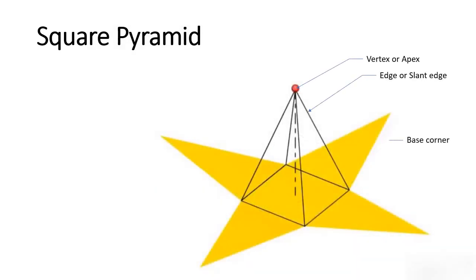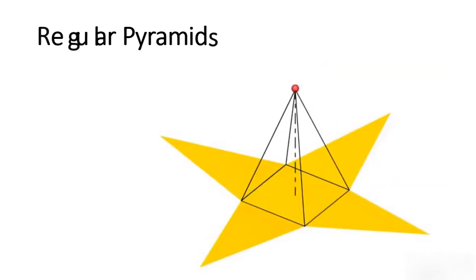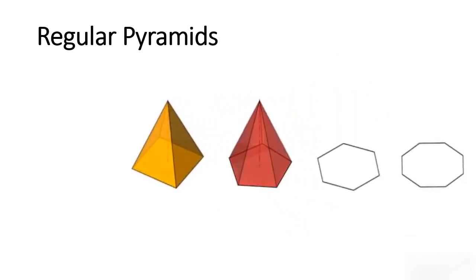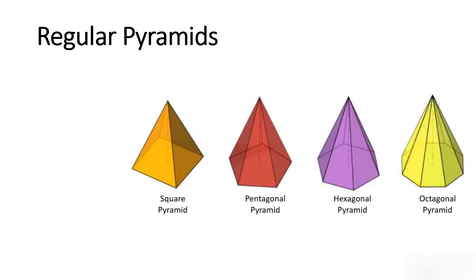The base edges define the base, and on the lateral surface we have the surface edge and face edges. These are some examples of regular pyramids: square pyramid, pentagonal pyramid, hexagonal pyramid, octagonal pyramid, and so on. A square pyramid has a square base, a pentagonal pyramid has a pentagonal base, and so on.